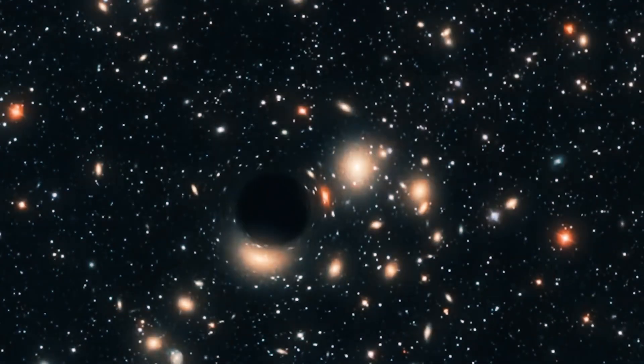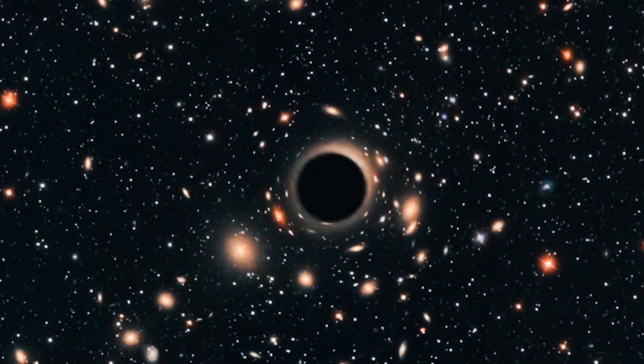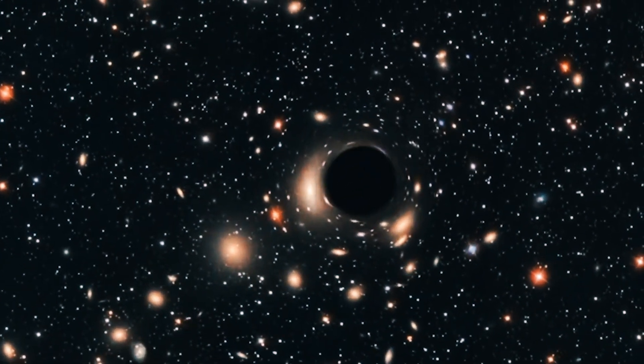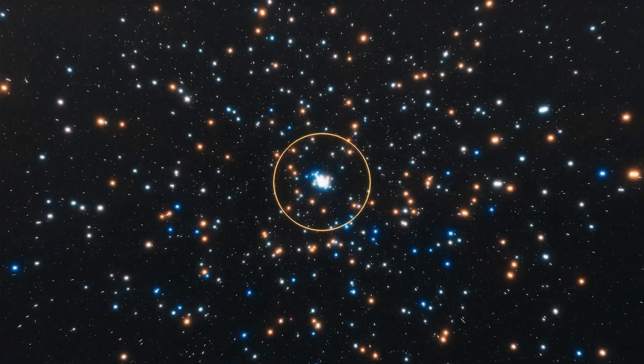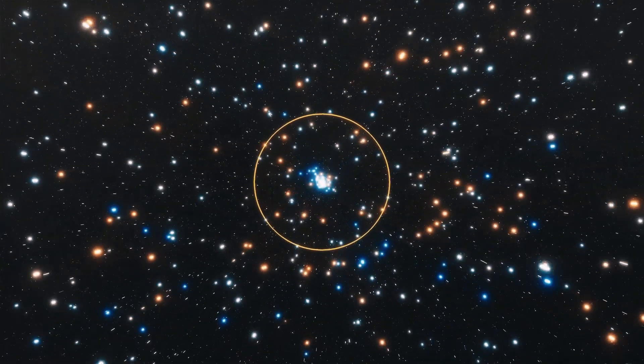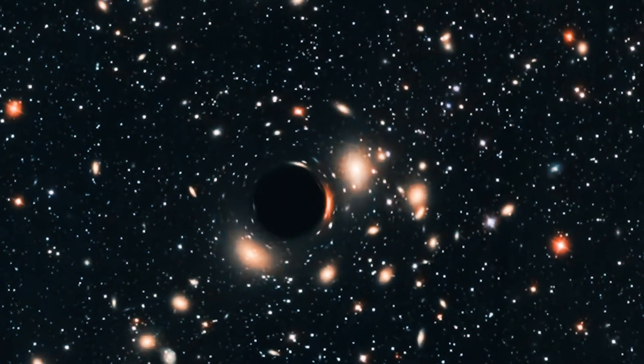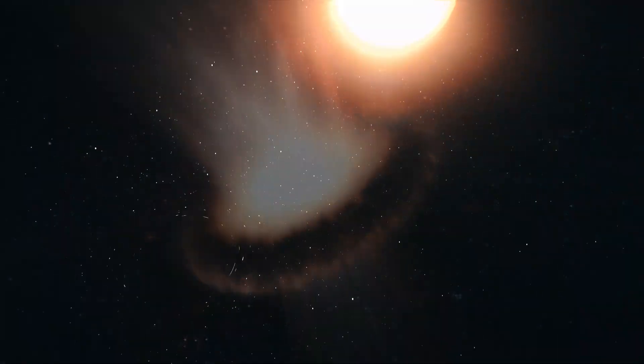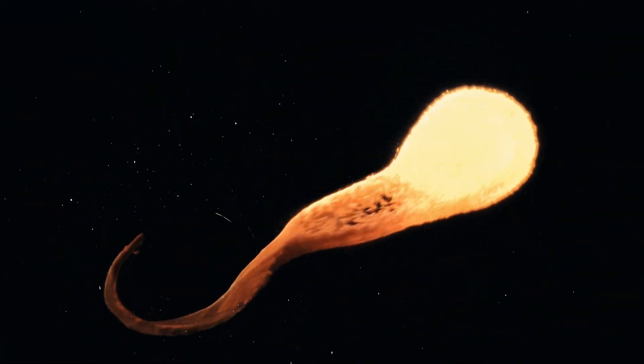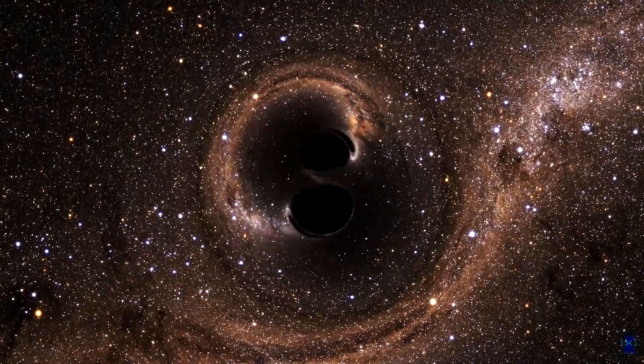Now researchers suggest if most of the primordial black holes are born at a size roughly 1.4 times the mass of Earth's Sun, they could potentially account for all dark matter. Natarajan and her colleagues say their new model shows that the first stars and galaxies would have formed around black holes, and those primordial black holes would have the ability to grow into supermassive black holes by feasting on gas and stars in their vicinity, or by merging with other black holes.